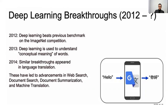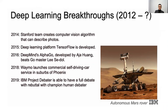In 2014, similar advances occurred in language translation, leading to advancements in web search, document search, document summarization, and machine translation. Also in 2014, computer vision algorithms were developed that can describe photos, and the deep learning platform TensorFlow was developed.